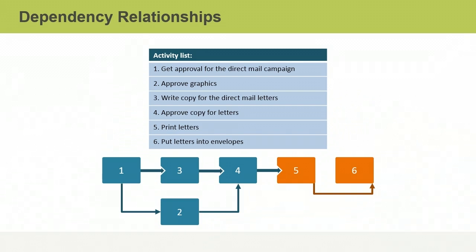Activity 4 cannot start until both activities 2 and 3 are completed, so you represent finish-to-start relationships between the 2nd and 4th nodes and between the 3rd and 4th nodes. The same type of relationship exists between activities 4 and 5.